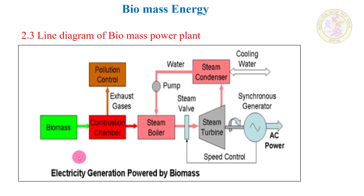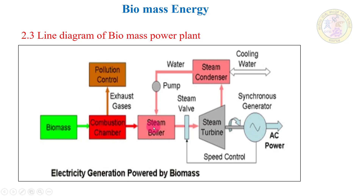This is a biomass power plant. The bio waste is collected and sent to a combustion chamber. The combustion chamber converts it into steam. The steam boilers and steam turbines are coupled, and in turn coupled to a synchronous generator, so that's how AC power is generated.